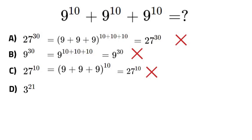So if we had 9 to the power of 10 plus 9 to the power of 10 plus 9 to the power of 10, we can factor out a 9 to the power of 10 and multiply that by 1 plus 1 plus 1.